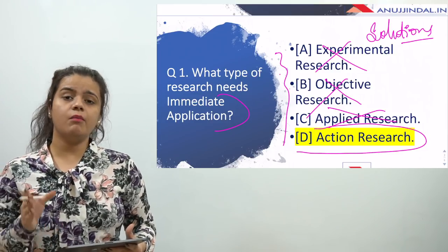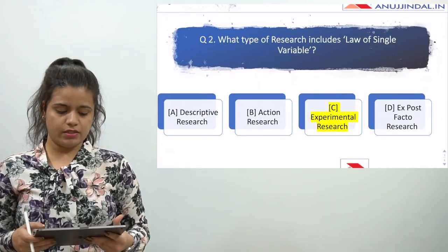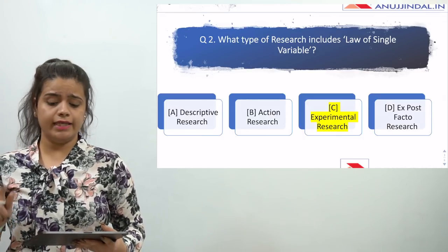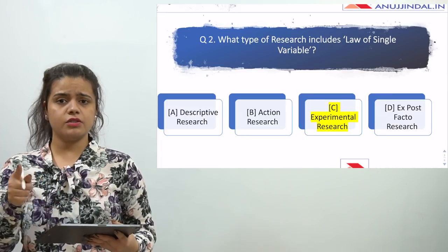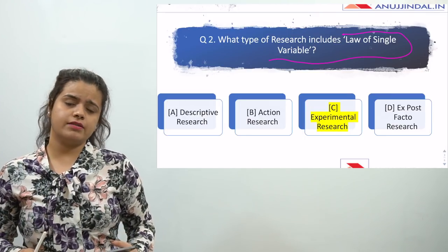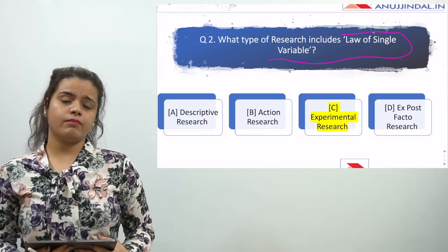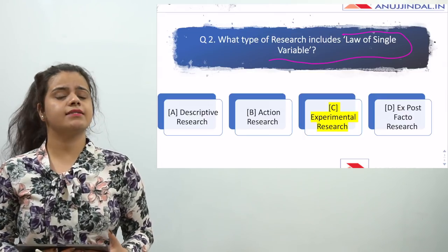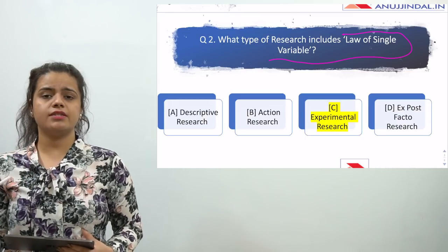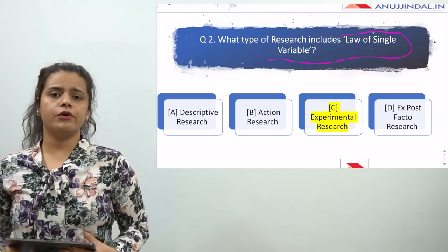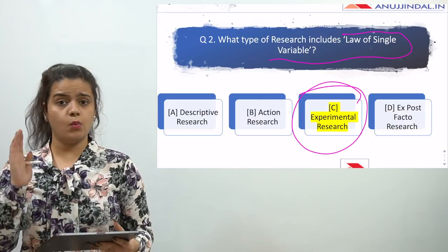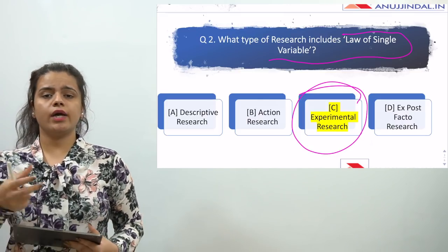The next question is: what type of research includes the law of single variable? Which research is also called the law of single variable? This question is again from types of research, which is very important for UGC NET. You have to study the definitions and examples very carefully for Paper 1. The answer here is experimental research — in experimental research you can control the variables.